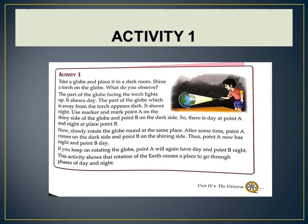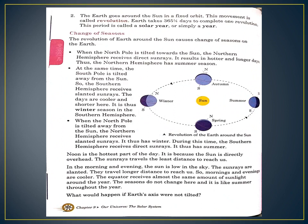Now let us move to page number 98. The earth goes round the sun in a fixed orbit — always remember all the orbits of the planets are fixed. This movement is called revolution. The earth takes 365 and one-quarter days to complete one revolution. This period is called a solar year, or simply a year.